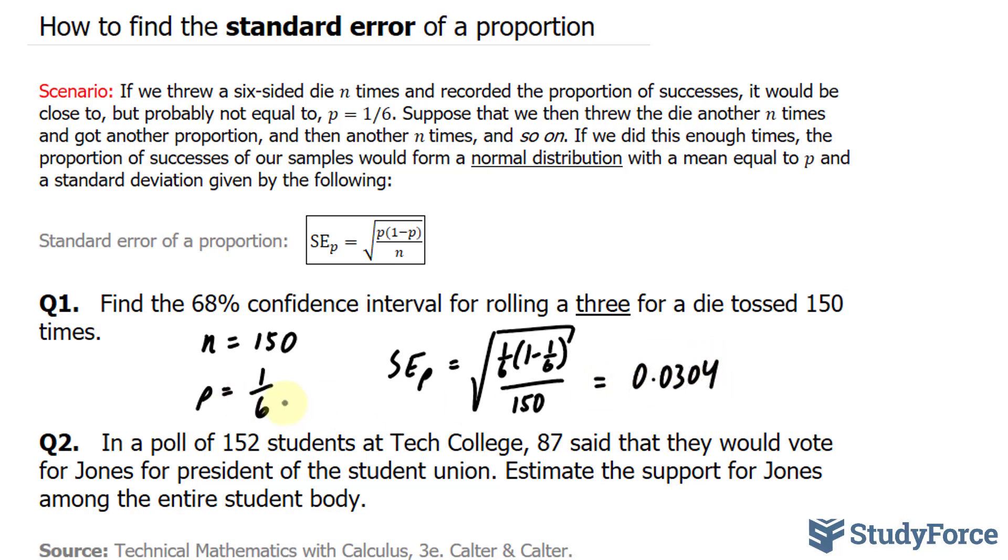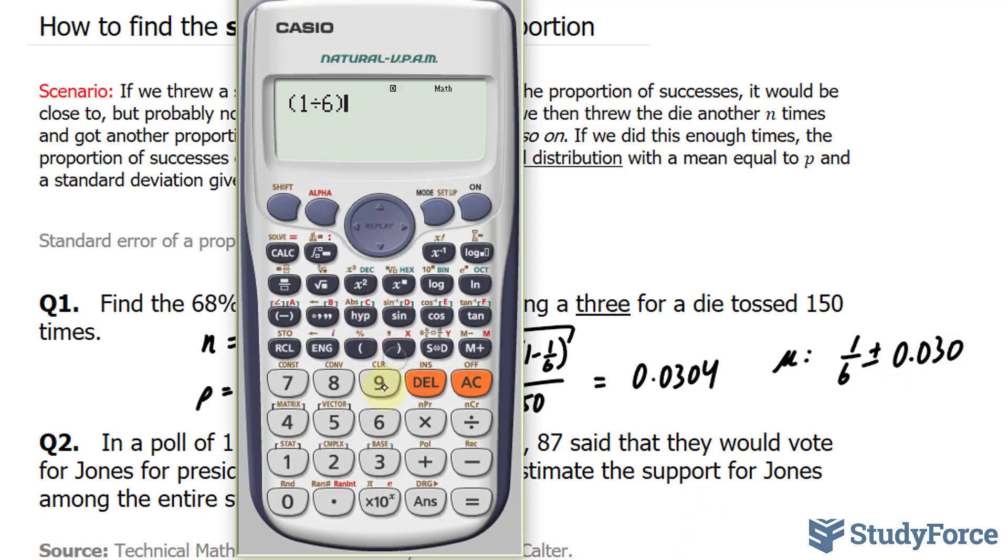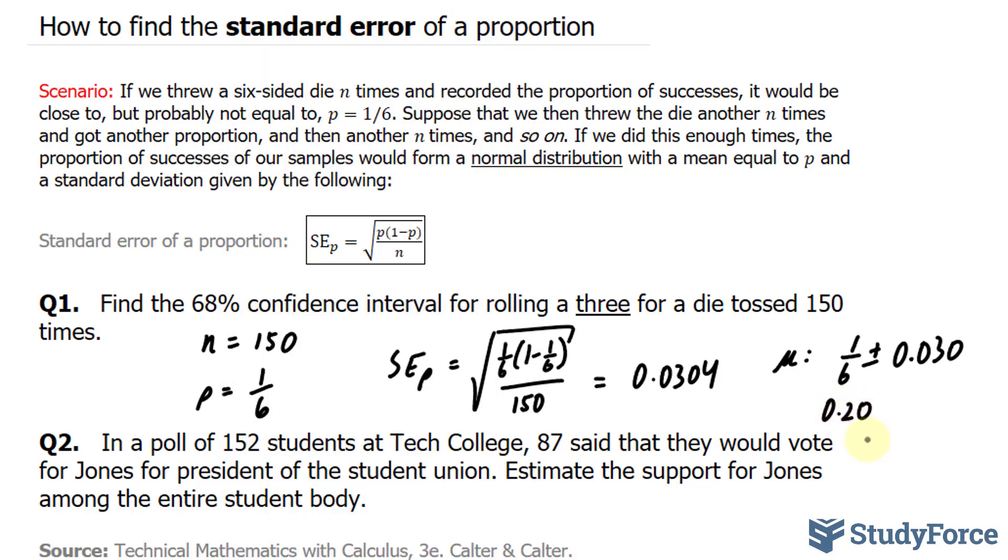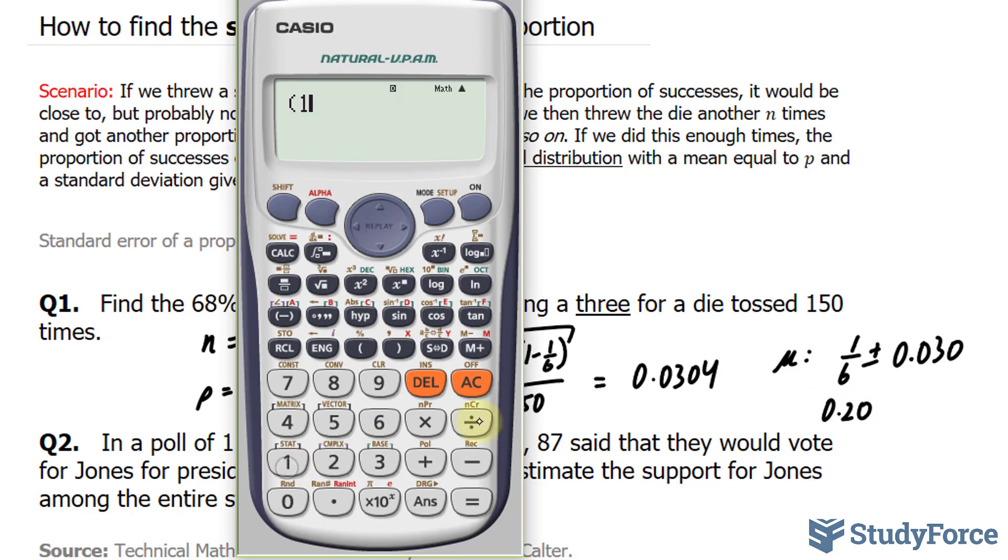The next step is to take this number and add it and subtract it to 1 over 6. So the average is 1 over 6 plus minus 0.030. Now using our calculator, we have 1 over 6 plus 0.03 which gives us approximately 0.2, and 1 over 6 minus 0.03, and that gives us 0.14.